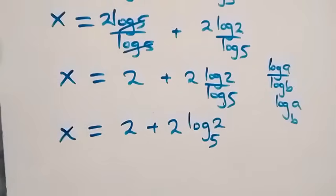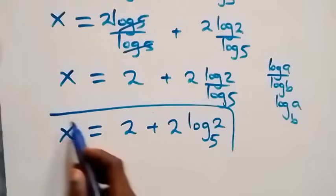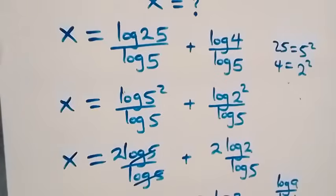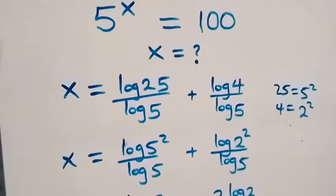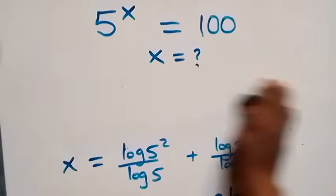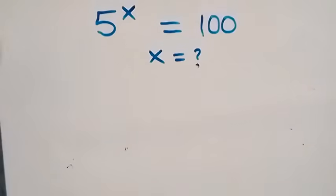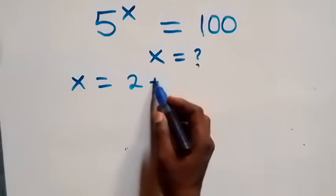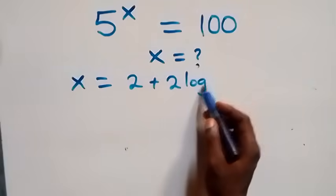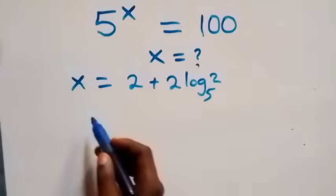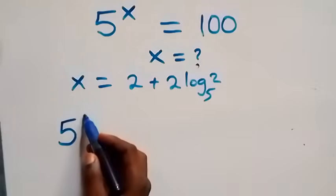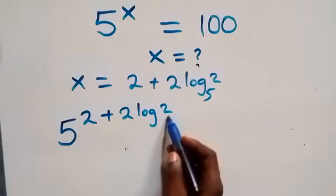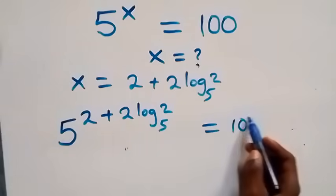So the value of x in this problem is x equals to 2 plus 2·log₅2. Now let's check if this satisfies the given problem — we substitute the value of x, that is x equals to 2 plus 2·log₅2, back in, and we have 5 raised to the power (2 + 2·log₅2) equals to 100.